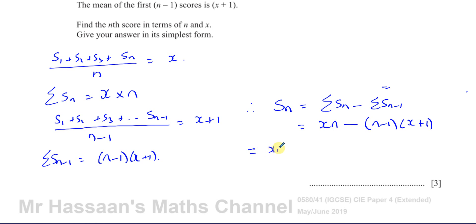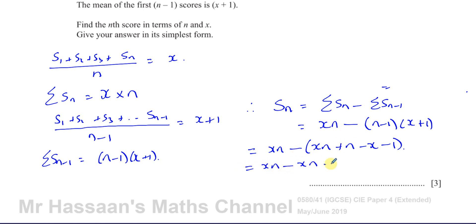So that's equal to xn. Now I'm going to expand the bracket, being careful with the minus sign in front of it. So n times x is xn, plus n times 1 which is plus n, minus 1 times x which is minus x, and minus 1 times minus 1 which is minus 1. So I have xn minus xn minus n plus x plus 1. These xn terms cancel out.